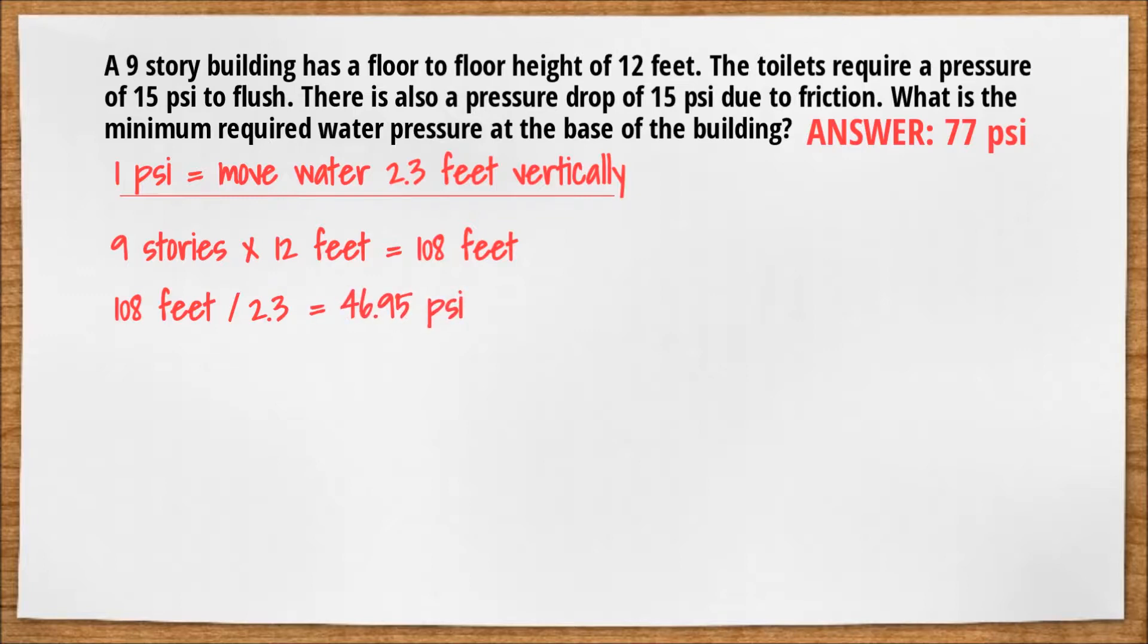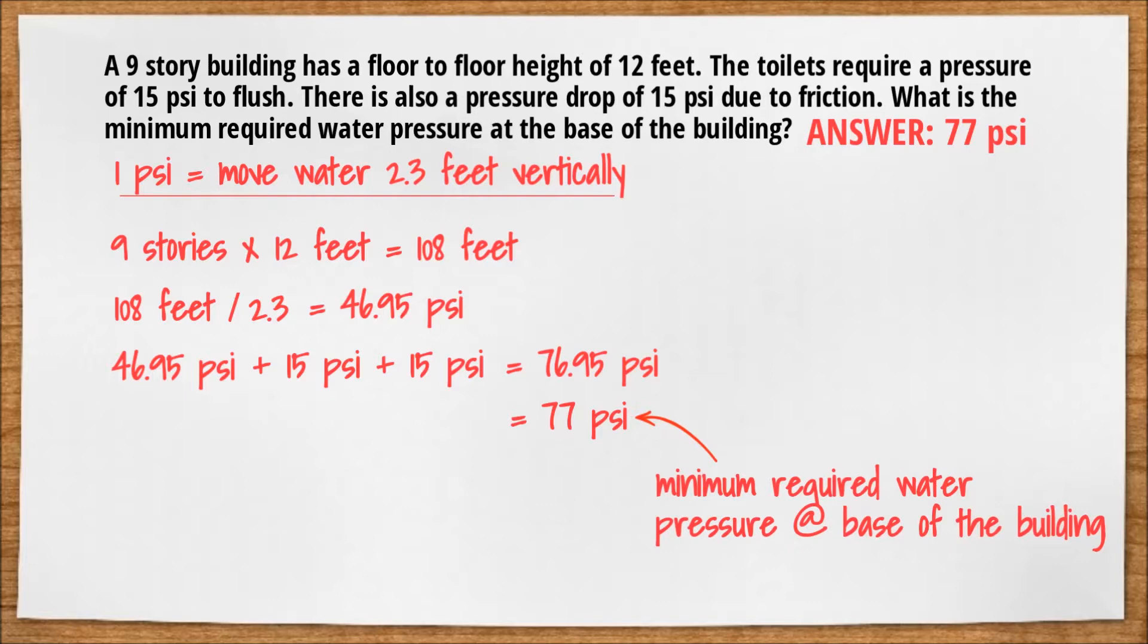But we have to remember to also factor in the psi lost to friction and the psi it takes to actually flush the toilet. So we have to take our 46.95 psi and add 15 plus another 15. This gets us 76.95 psi, which we can round up to 77 psi. So the minimum required water pressure at the base of the building is 77 psi.